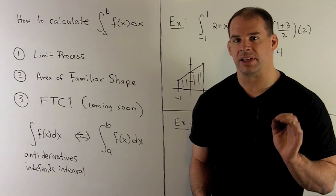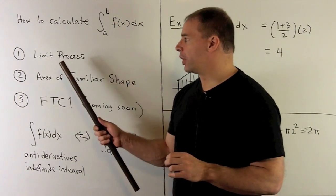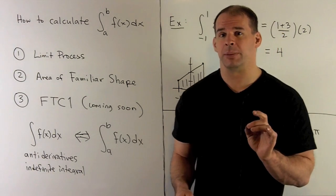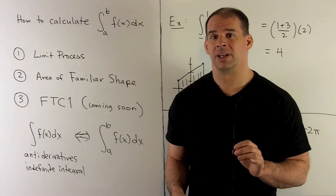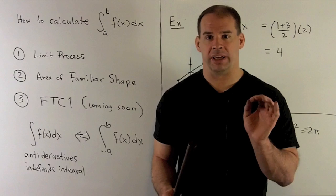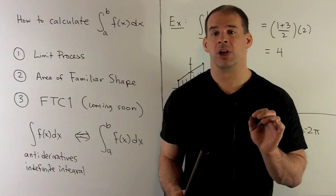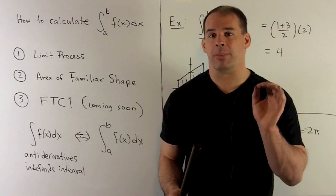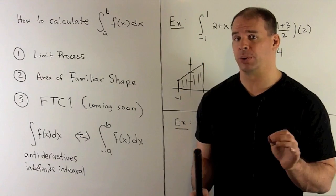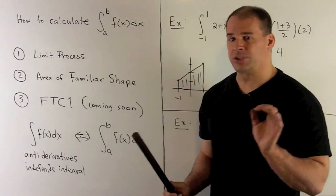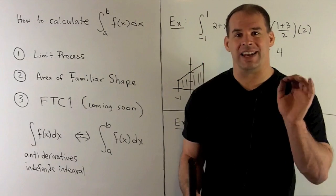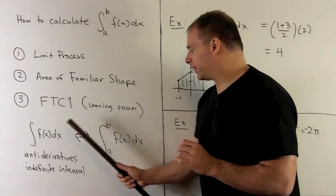So how do we calculate these definite integrals? We have three options. First, the limit process — just going through the definition using the rectangles. It's a lot of bookkeeping and can be time consuming. Next, if you sketch the picture and get lucky — meaning outcomes of familiar shapes like a circle or rectangles — you take areas and worry about being above or below the x-axis. Last option, which we don't have yet but will soon: the First Fundamental Theorem of Calculus. That's going to give us a connection between definite integrals and indefinite integrals.